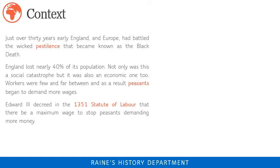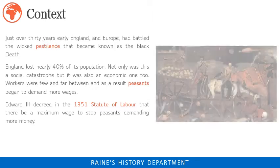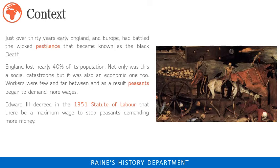'Things would not go well with England until everything was held in common.' It was these words uttered by John Ball, a priest in England, that helped start the Peasants' Revolt in 1381. Just 30 years earlier, England and Europe had battled the wicked pestilence that became known as the Black Death. England lost nearly 40% of its population — it was a social and economic catastrophe.